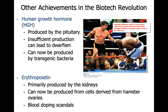A couple of other examples of this biotech application in the production of medication — or other human products — is human growth hormone. This is produced in the pituitary, which is part of your brain. If you have a deficiency in human growth hormone, this can lead to dwarfism. HGH can now be produced by transgenic bacteria and is used to treat dwarfism, as well as individuals battling diseases involving huge amounts of weight loss.